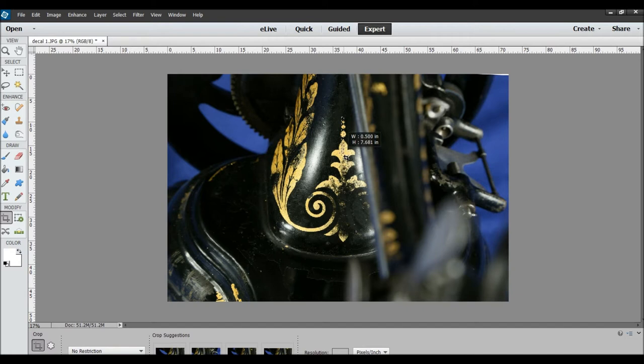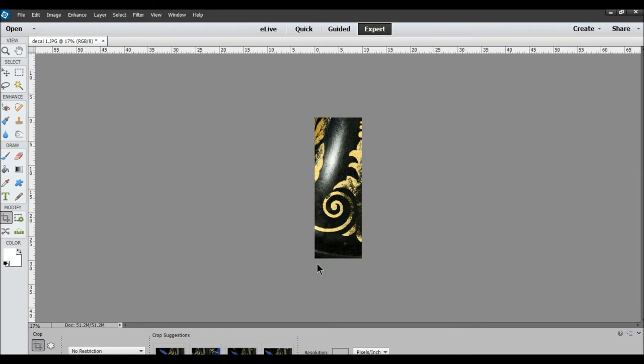So, the first thing I did is use your crop tool to select just the portion of the decal I want. Next, I want to change this to black and white. Newspaper usually works good for me.